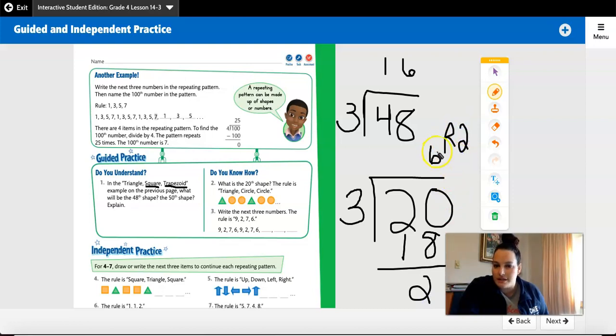I know that I have 6 groups of triangle, circle, circle. So the 18th position is going to be a circle, but I have 2 more. So I need to go back to my pattern and count 2 more in this pattern.